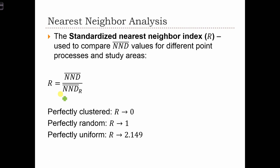Based on knowing what the nearest neighbor distance should be under the random case, we introduce the standardized nearest neighbor index, denoted by r. It's the ratio of the observed nearest neighbor distance average to the one we expect if the data were random.